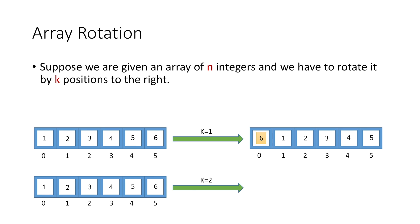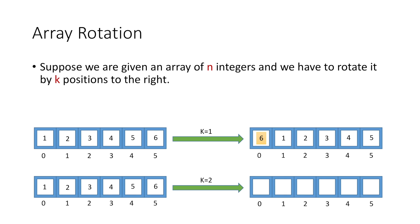Similarly, if for the same array the value of k is 2, we move every element by 2 positions to the right. Element 1 will now be at index 2, element 2 at index 3, 3 at index 4, and 4 at index 5. Since we have reached the end of the array, we go to its beginning: 5 would be at index 0 and 6 at index 1.